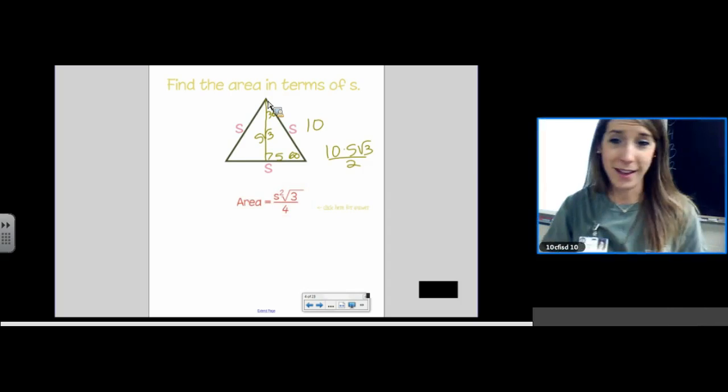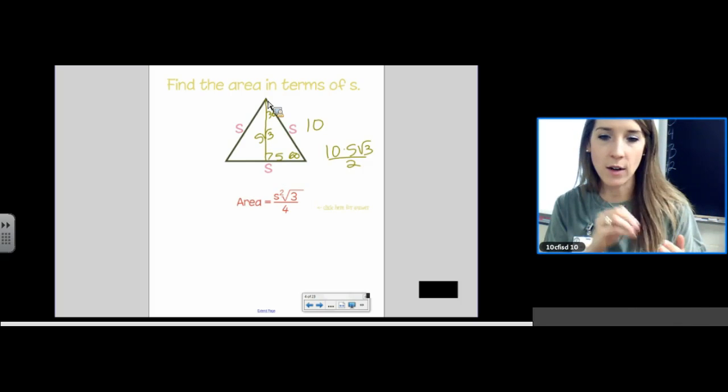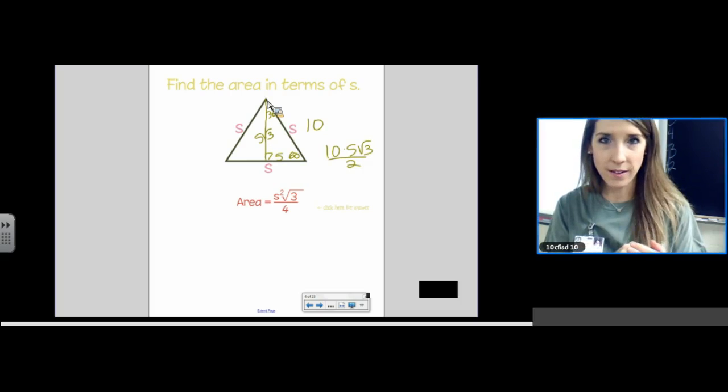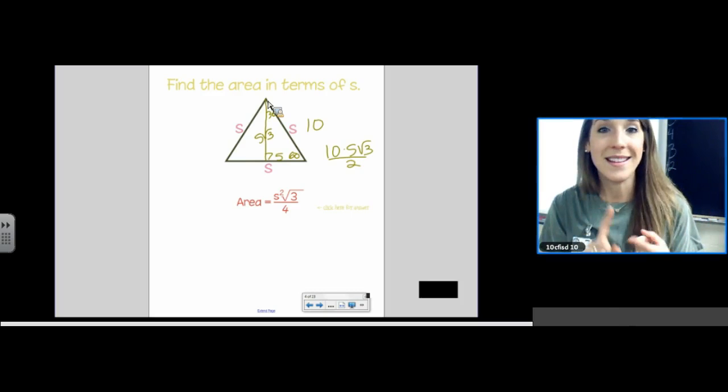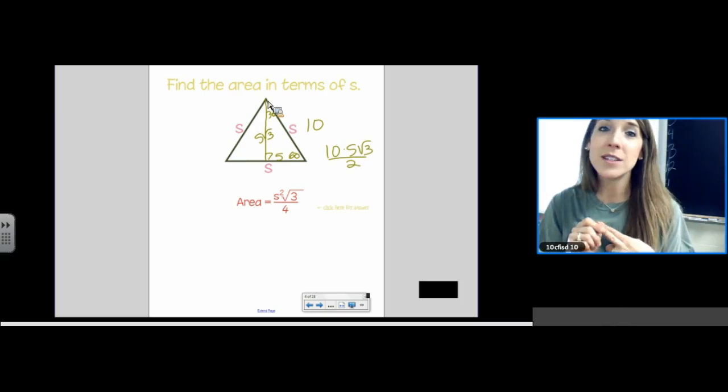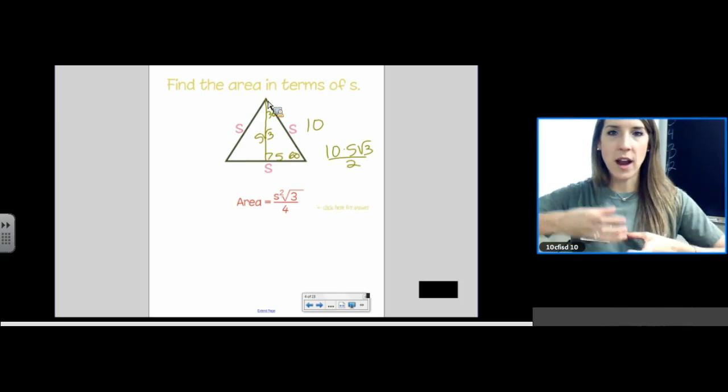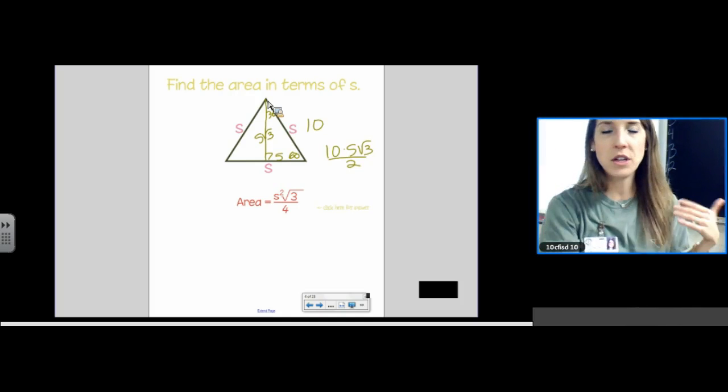So, if you wanted to memorize an additional formula that's like a shortcut, since equilateral triangles come up often enough, it might be worth your time to memorize this shortcut. So, here's the formula, if you want, that you could use to find the area of an equilateral triangle. Side squared, root 3, over 4. Side squared, root 3, over 4.